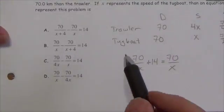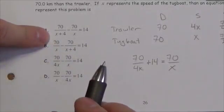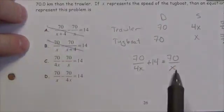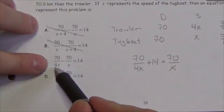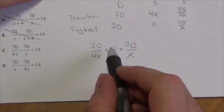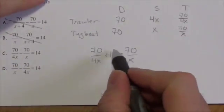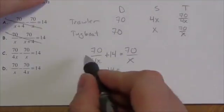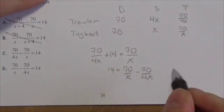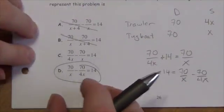Checking the answer choices: since the trawler goes four times as fast, options with addition in the denominator can be eliminated. Looking at 70 over 4x minus 70 over x equals 14 — rearranging, that becomes 70 over x minus 70 over 4x equals 14, which is answer D. That's the equation to solve for their speeds.